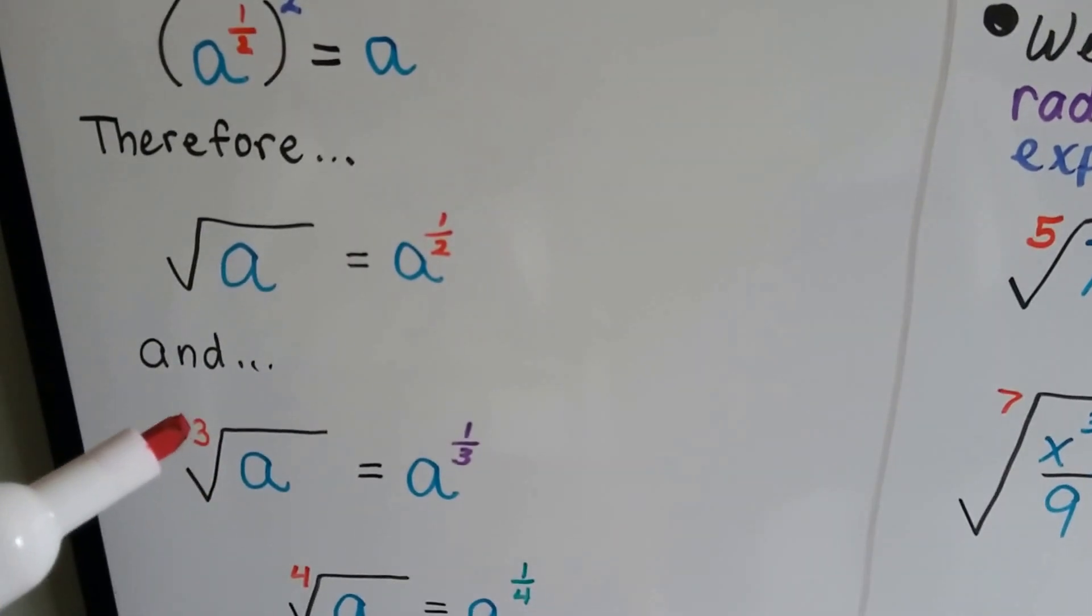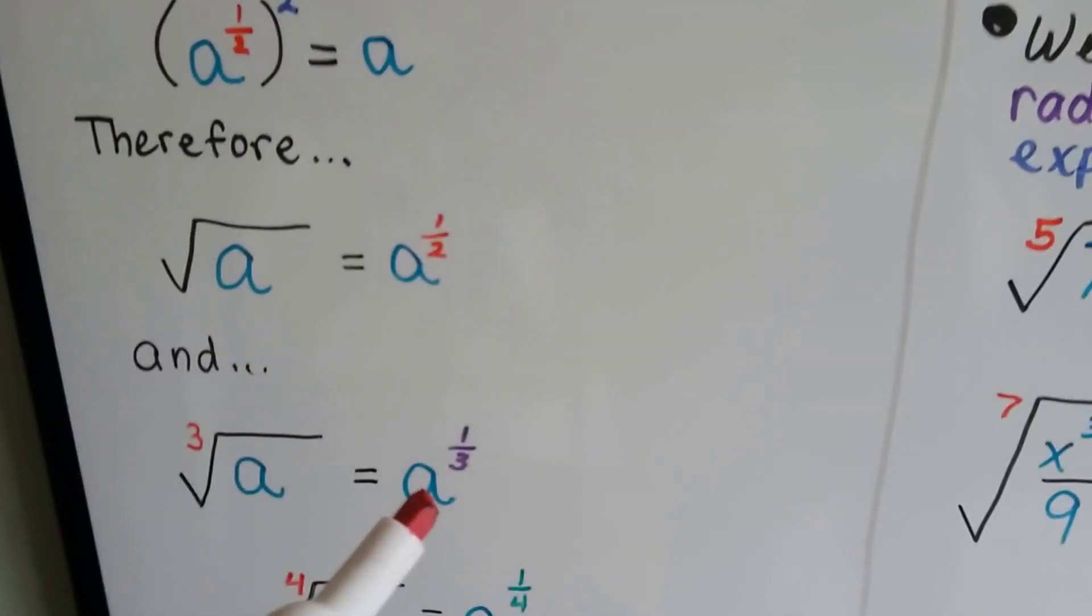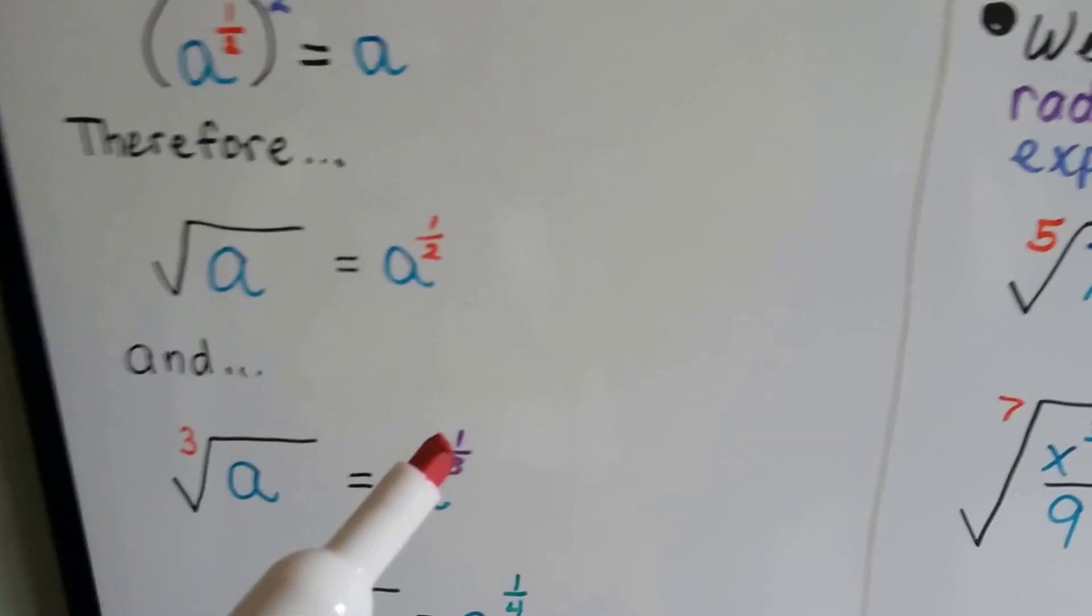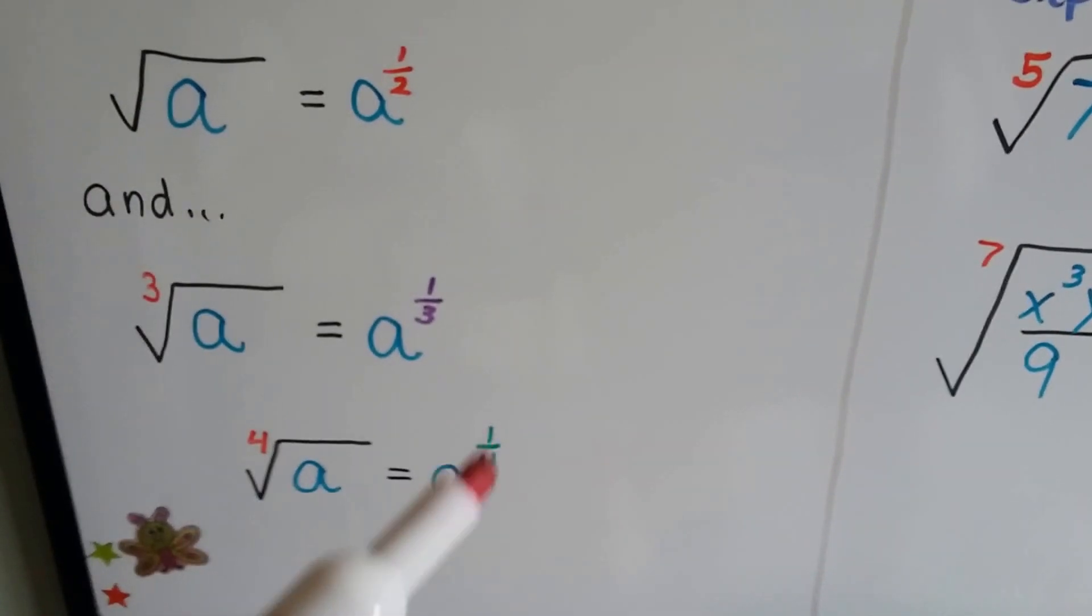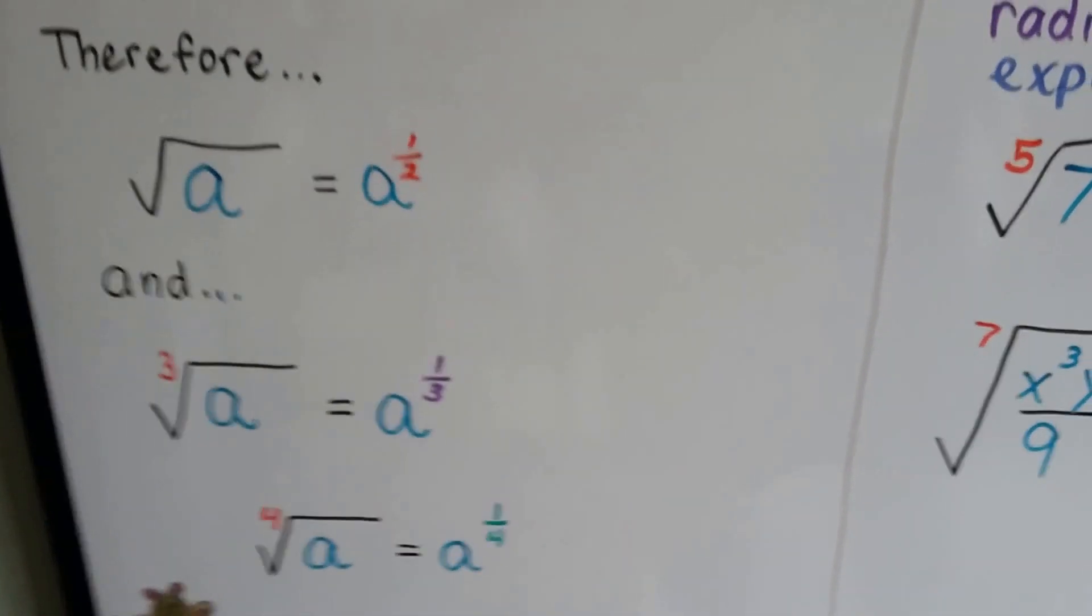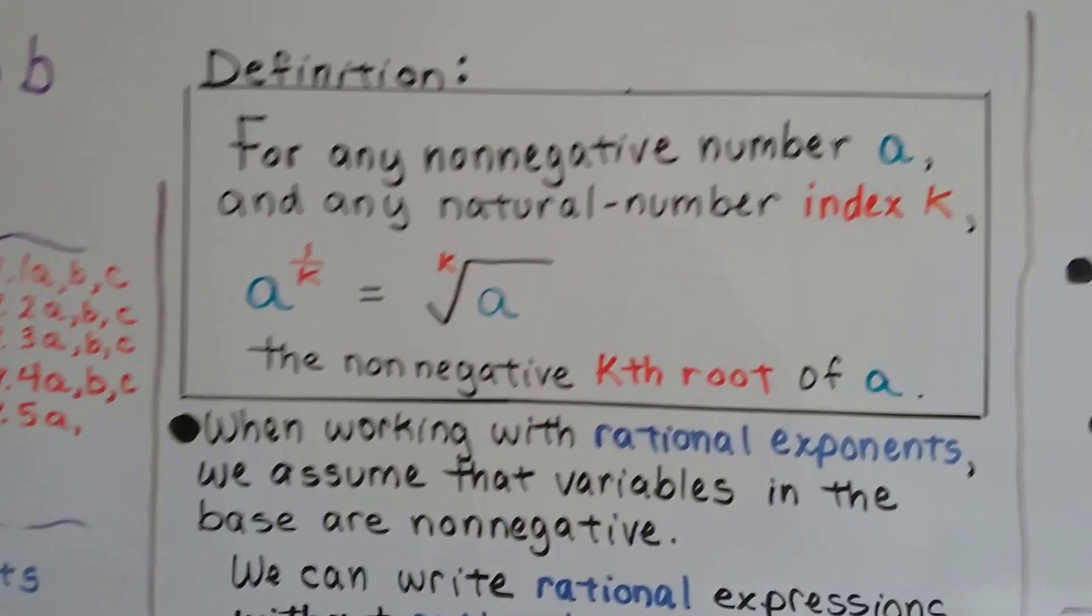It also means that we could take the cube root of a and make it as a to the one-third power. Same thing for the fourth root of a, it would be a to the one-fourth. That's what we're going to talk about in this video, how we can have little fractions as exponents.